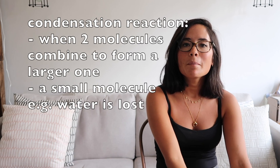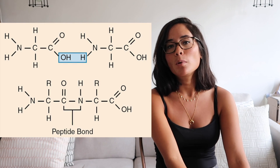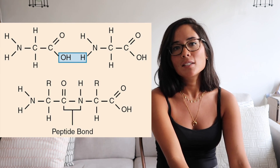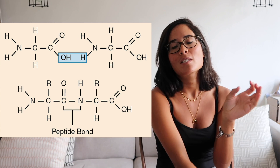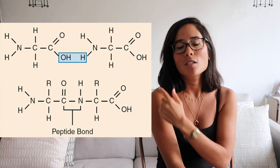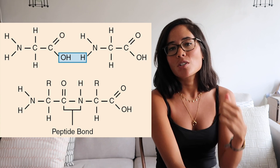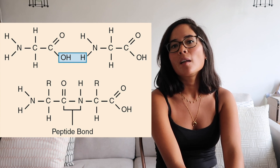When amino acids join together to form a polypeptide or dipeptide, they undergo a condensation reaction, meaning they lose a small molecule in the process — this is water — and they form a peptide bond between the two amino acids. The peptide bond is actually a covalent bond, and it forms between the carboxyl group of one amino acid and the amino group of the neighbouring amino acid, as you can see in the diagram. These condensation reactions continue until you have a very long chain of amino acids.